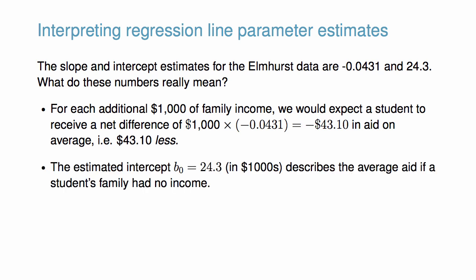The estimated intercept, b₀ = 24.3, describes the average aid if a student's family has no income. The meaning of the intercept is important since the family income for some students at Elmhurst is $0. In other applications, the intercept may have little or no practical value if there may not be observations where x is near 0.